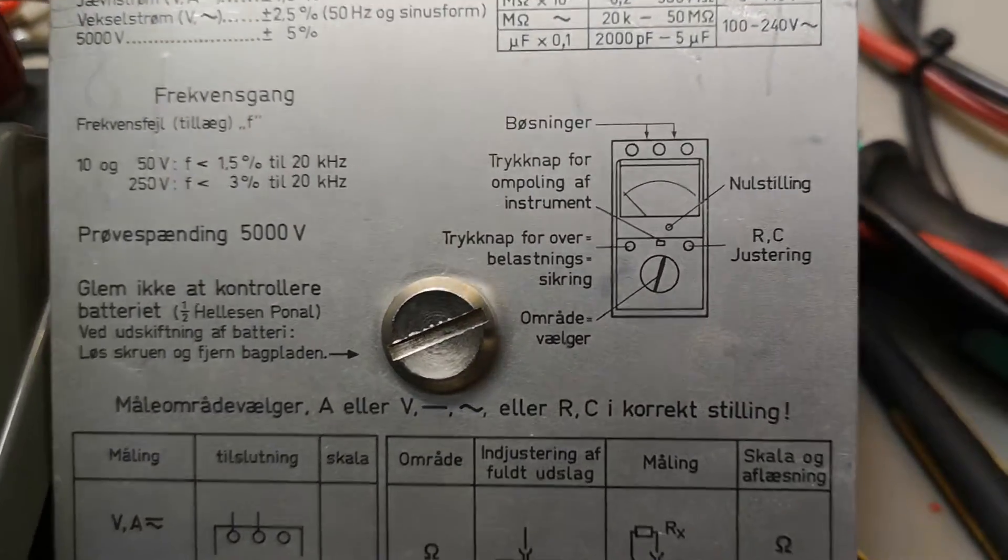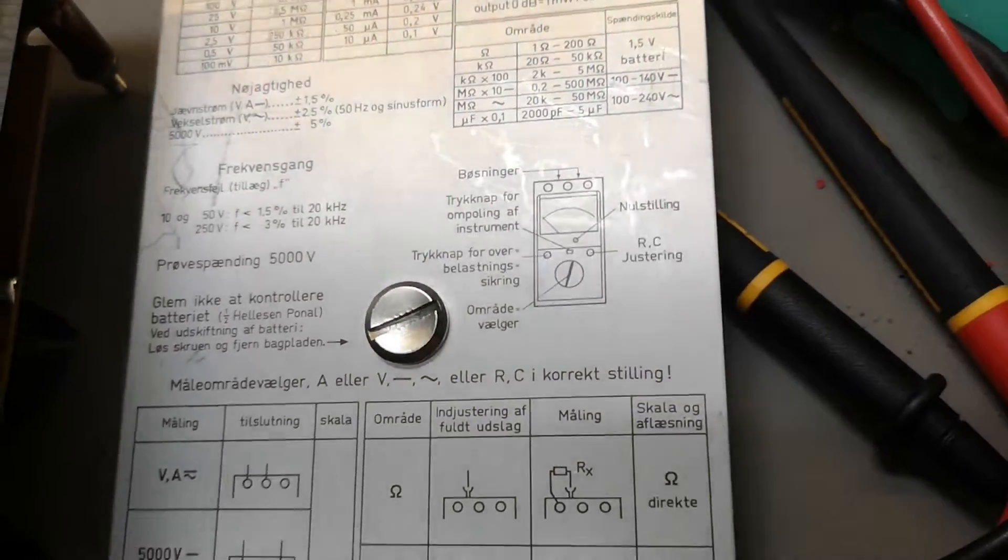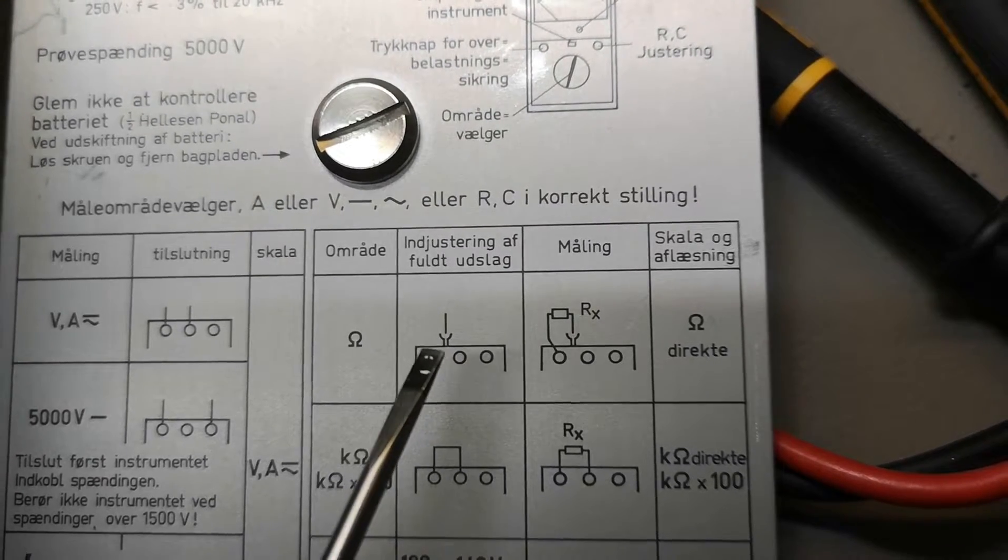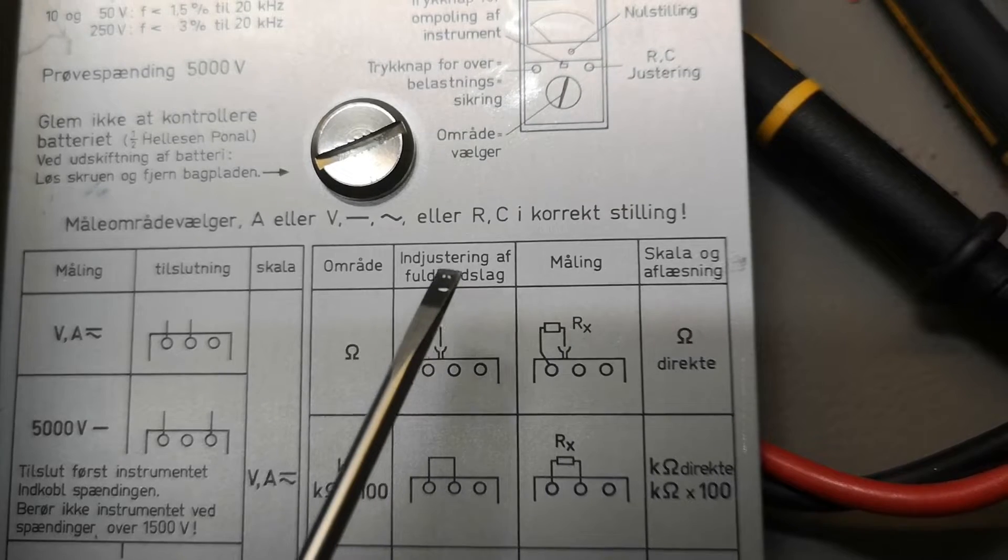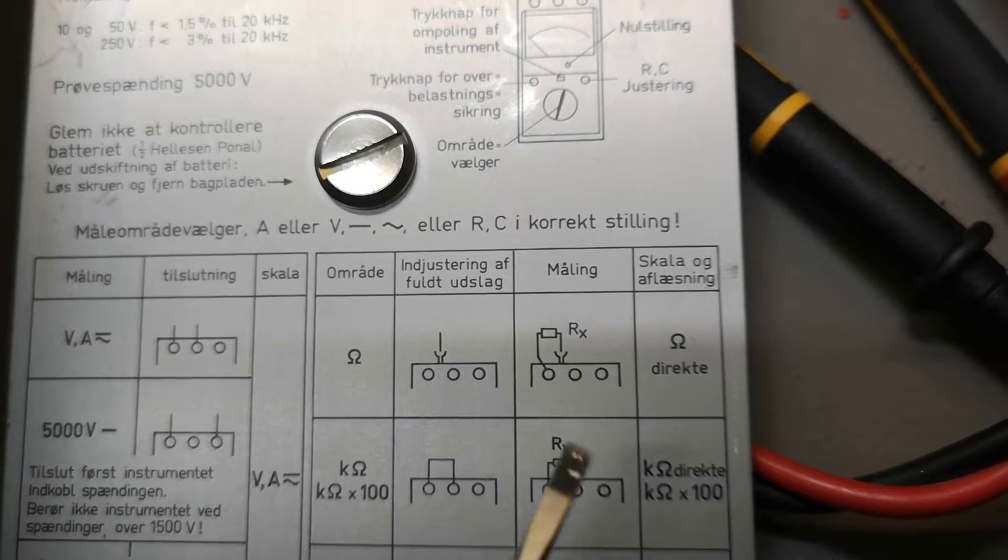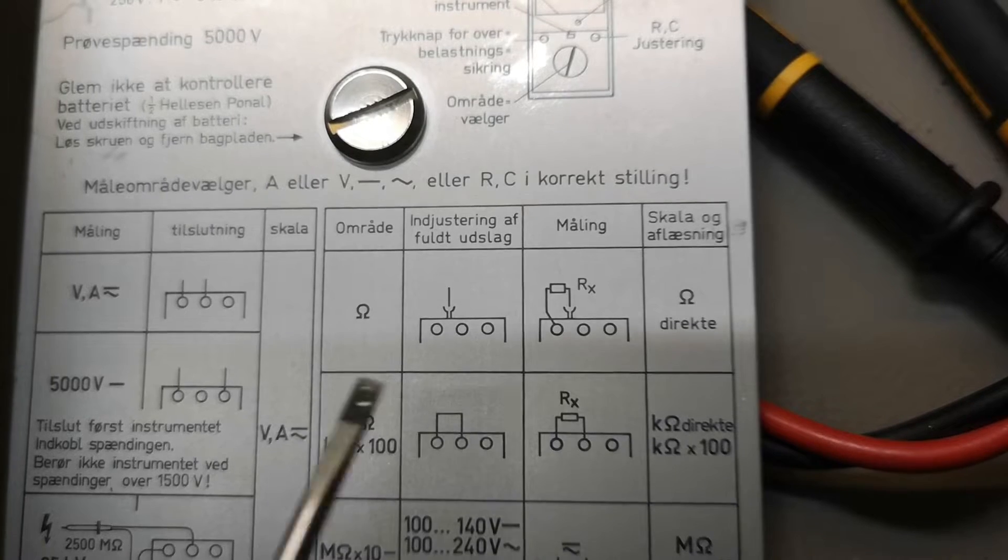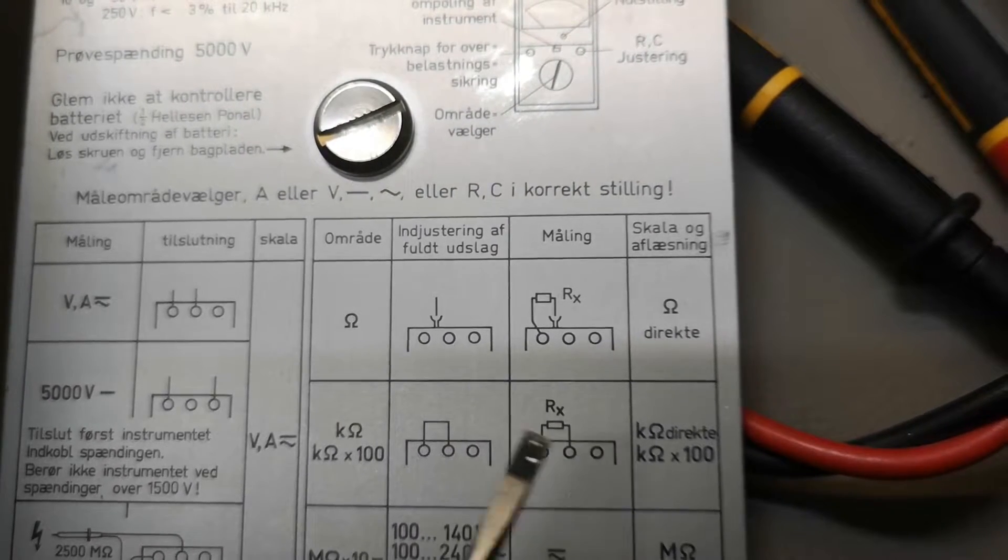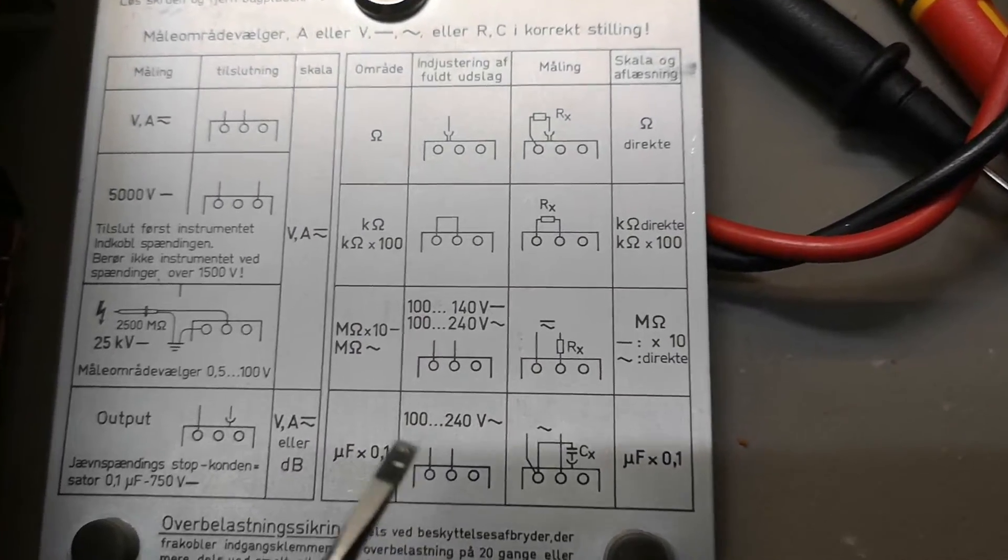It's still got this funny thing in ohms mode. When you stick in one banana, it kind of goes on, and then you adjust for full range. Then you put in your resistor you want to measure, and in the next range you short circuit to get full range, then put in a resistor and it goes the other way. This is going to be a little bit funny.